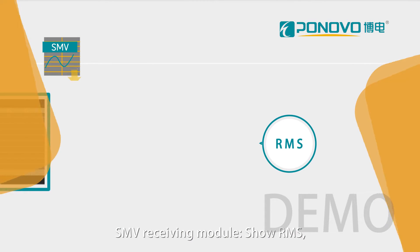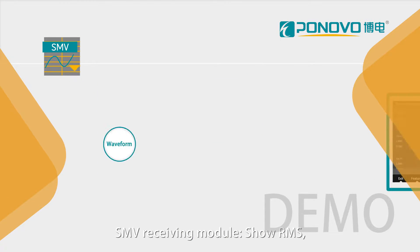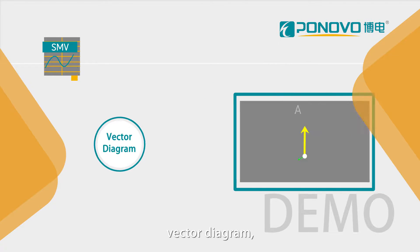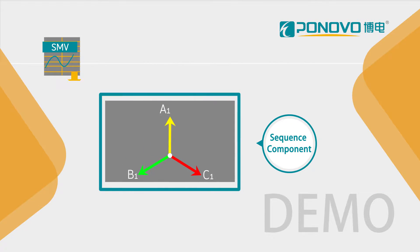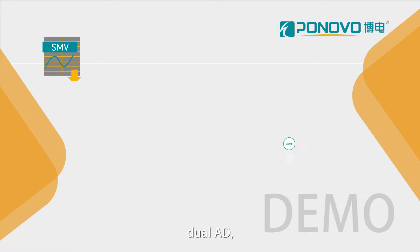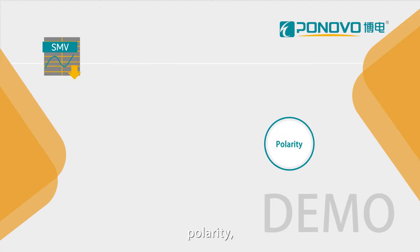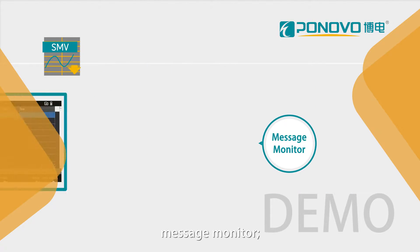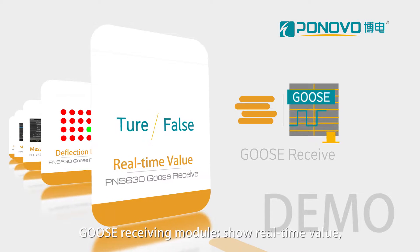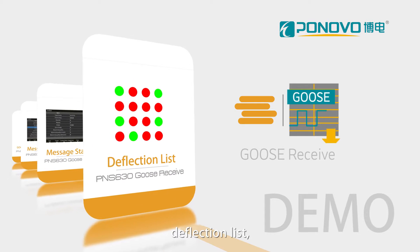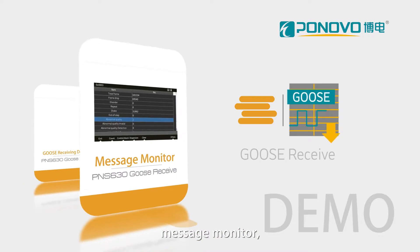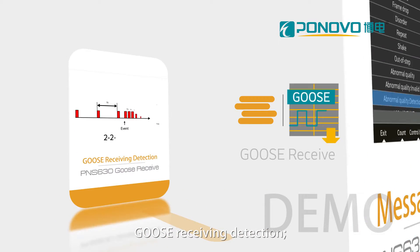The SMV receiving module shows RMS, waveform, harmonics, vector diagram, sequence component, power, dual ID, face check, polarity, message statistic, and message monitor. The GOOSE receiving module shows real-time module, deflection list, message statistic, message monitor, and GOOSE receiving detection.